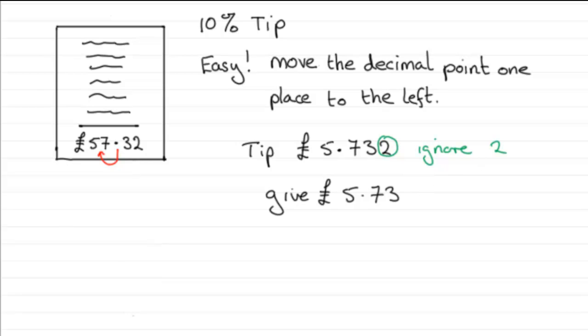And what happens if your bill was £6.24? Then we take our decimal point, move it back one place to the left. And this time, the tip would be 0.624. We don't want this 4 here, we've got two digits behind the decimal point, so we ignore the 4.